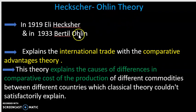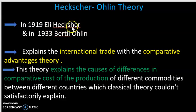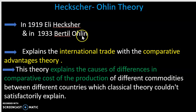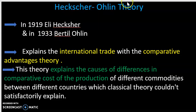This theory will explain two main economists. First, this theory is by Eli Heckscher in 1919. Later, a student contributed to this theory — that is Bertil Ohlin, in 1933. This theory is called Heckscher-Ohlin.